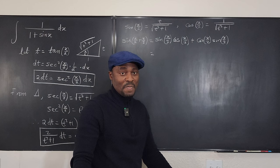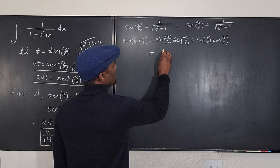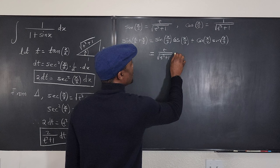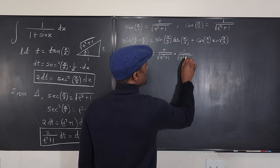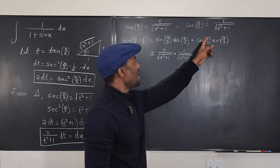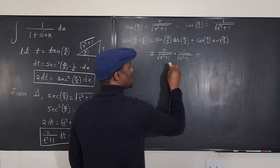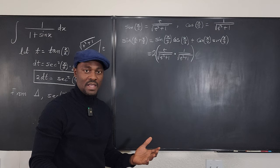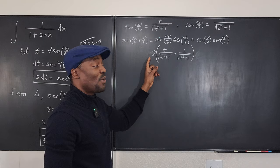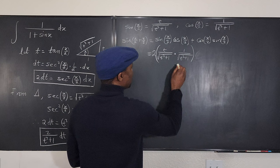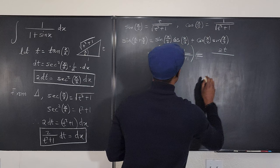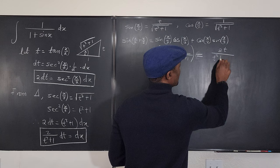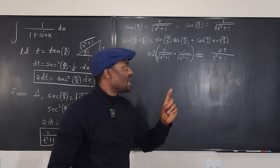Multiplying sine(x/2) times cosine(x/2): t over sqrt(t²+1) times 1 over sqrt(t²+1). Adding both identical terms gives 2 times that product, which is 2t over t squared plus 1. This is your sine x every time you make this substitution. And cosine x equals 1 minus t squared over t squared plus 1.